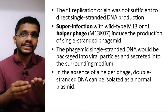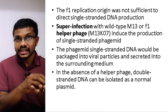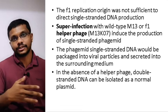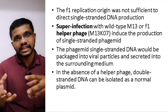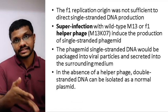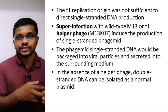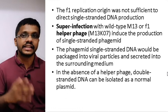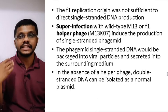We transfer the phagemid into E. coli cells, which do not have the ability to replicate it. We then infect the same E. coli with the helper phage. The helper phage produces the necessary proteins but cannot itself be incorporated into phage particles. Using the proteins produced by the helper phage, our phagemid matures into a functional virion containing single-stranded DNA with our foreign DNA insert. In the absence of the helper phage, the phagemid cannot produce virus particles and instead acts like a plasmid, being inherited from one generation to another.